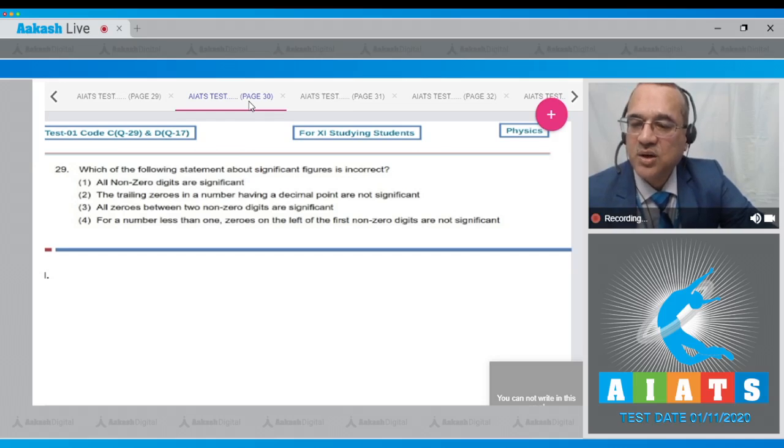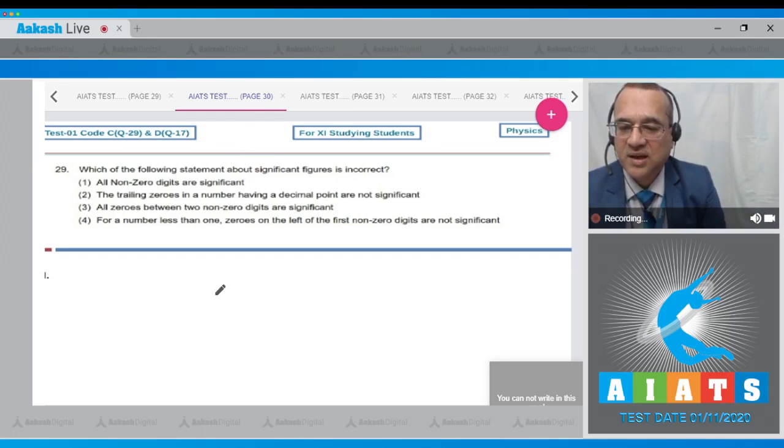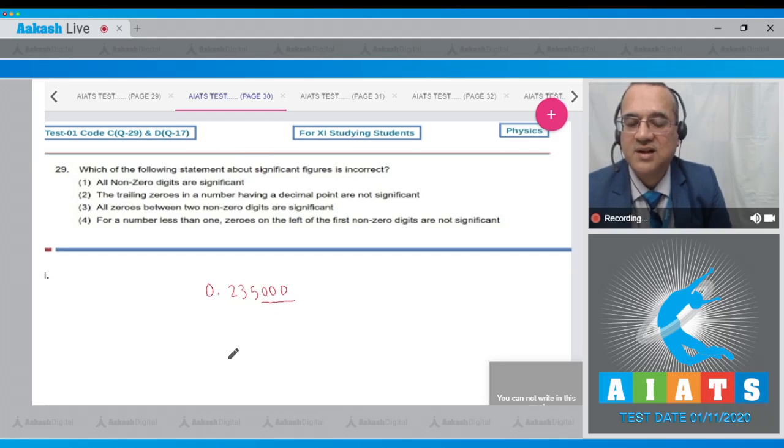The trailing zero in a number having a decimal point are not significant. What is the trailing zero? Like I write 0.2350, he says that after the decimal these zeros are not significant. That is a wrong statement. That is wrong. Therefore this becomes the correct option - incorrect statement. So answer to this question is option number 2.